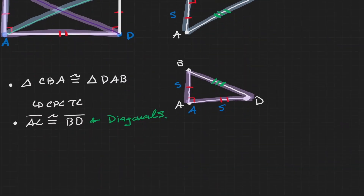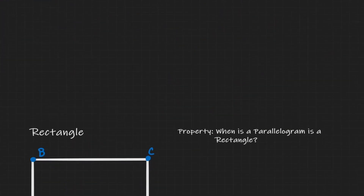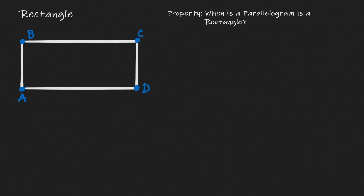Now let's take a look at another property. Here we want to show when is a parallelogram a rectangle — what conditions need to be fulfilled for us to say that a parallelogram is a rectangle? Let's assume that we do not know that the left-hand side figure is a rectangle; the only thing that we know is that we have a parallelogram.